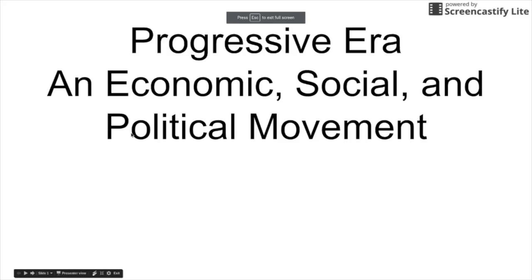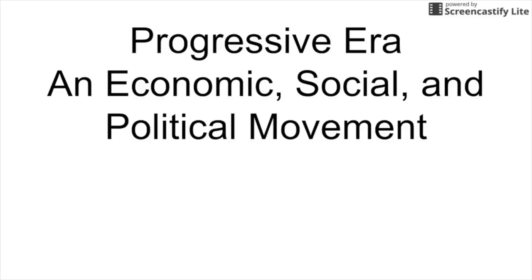Today we want to discuss the Progressive Era as an economic, social, and political movement. The Progressive Era itself is basically a change in attitude of the American people, where they decided that someone else — in a lot of cases, the government — should be helping them out. We're going to talk about different legislation and different amendments that were basically set up to try to create a better environment for people.